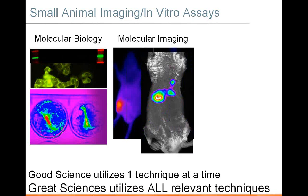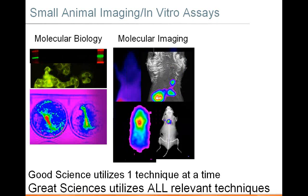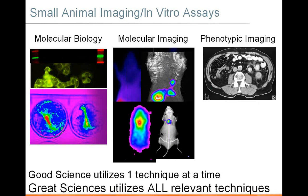You can also co-register these molecular events with anatomy using reflectance imaging or x-ray imaging. This is in contrast to classical phenotypic or structural imaging, where you're looking at just the bodily structure, which is important, but you're not getting any information about molecular events.